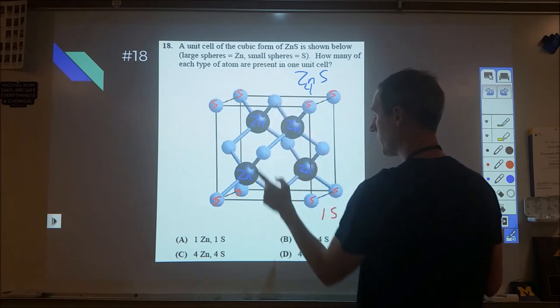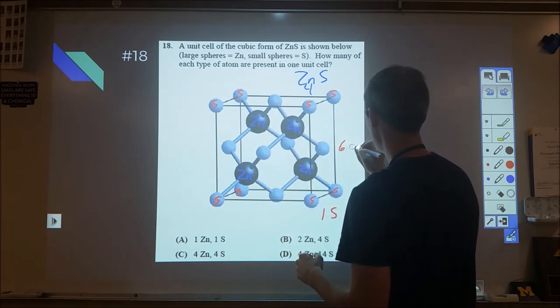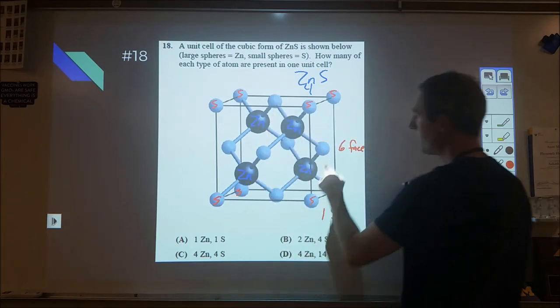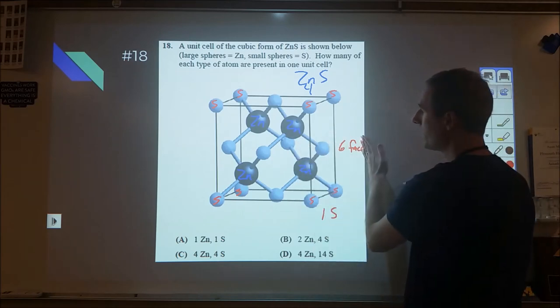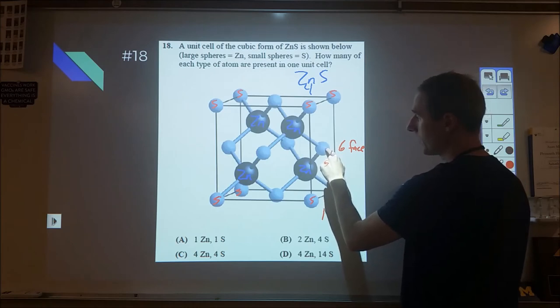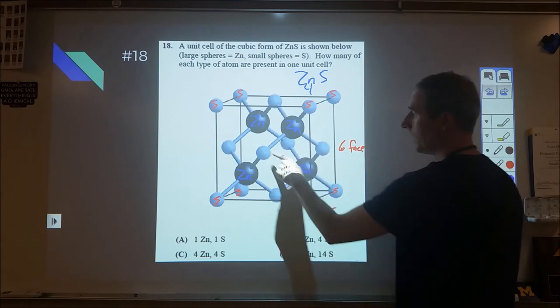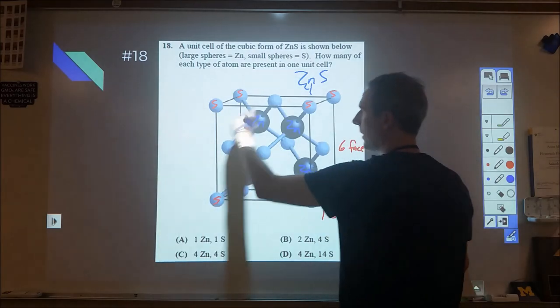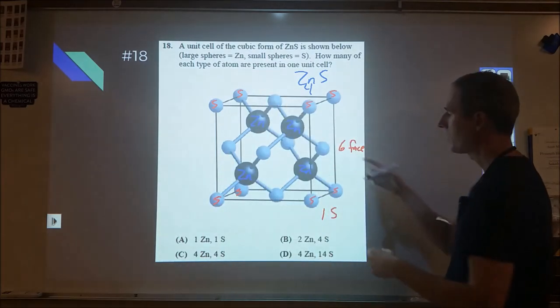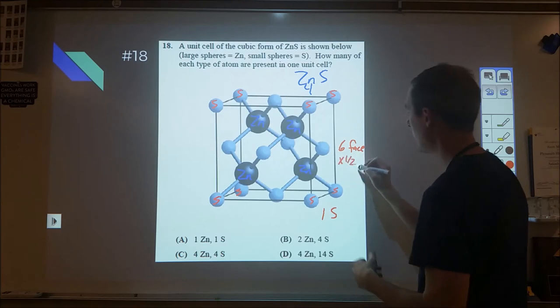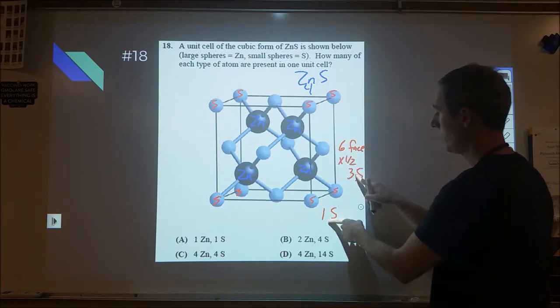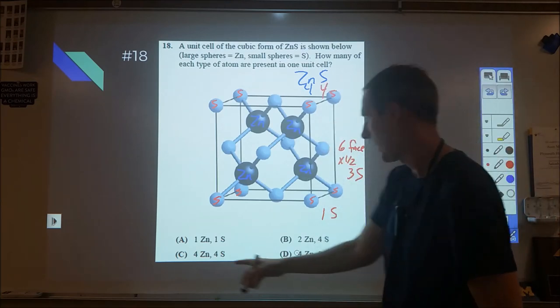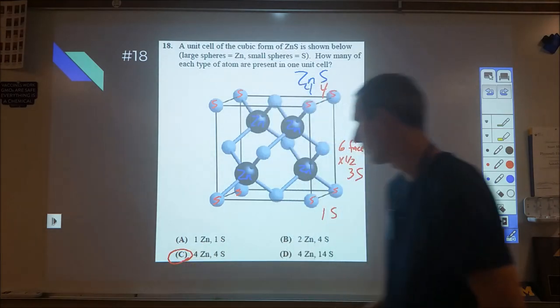The face is shared between two of these unit crystals, so therefore I have to share. This is half to here, half to over here. This one's half to here, half to in front. Half to here, half to this one. Half to here, half to the one above. So I have six times one-half, that's three more sulfurs. So in total I have my four, so I have four of zinc and four of sulfur.